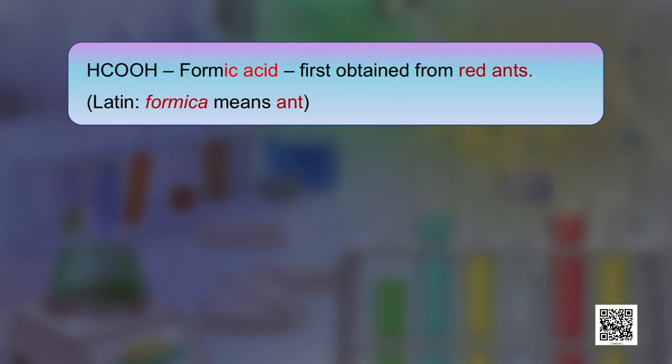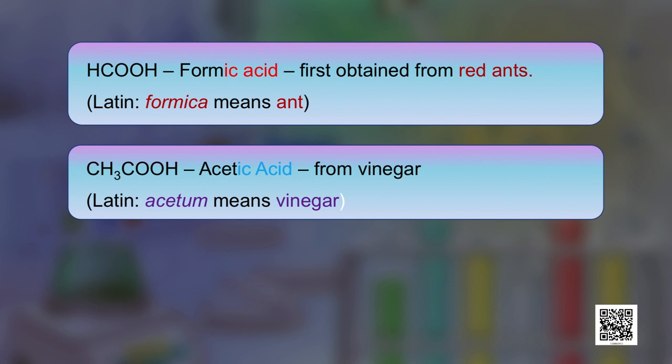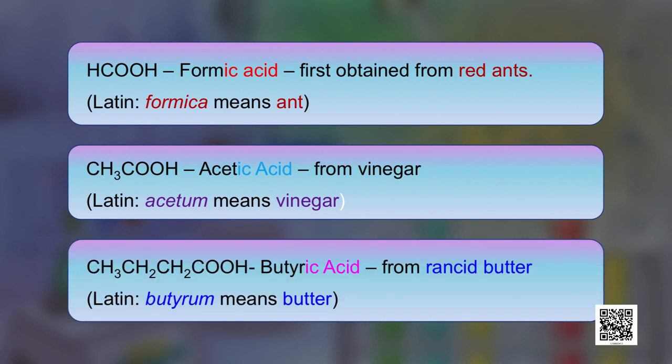For example, formic acid — the '-ic acid' comes from red ants, that is 'formica', the Latin word meaning 'ant', and the structure is HCOOH. For acetic acid, which comes from vinegar, the formula is CH3COOH — 'acetum' in Latin means vinegar, and vinegar contains acetic acid. For butyric acid, which contains 4 carbon atoms, the name comes from 'butyrum' in Latin meaning butter, and since rancid butter is called 'butyrum' in Latin, this acid is called butyric acid.